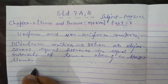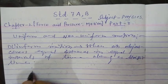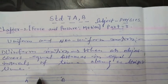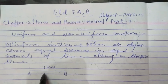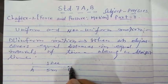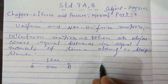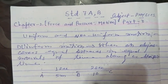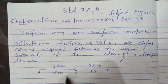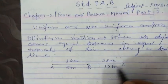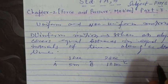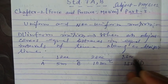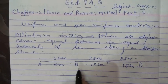For example, suppose a body is at point A. It starts moving from A to B in 1 second covering 5 meters, and from B to C in the next 1 second covering 10 meters, and from C to D covering 15 meters in 3 seconds. Then the body is said to be in uniform motion.